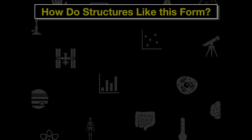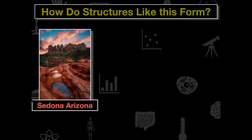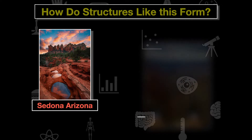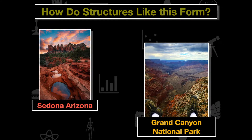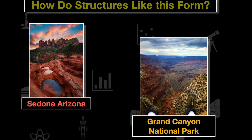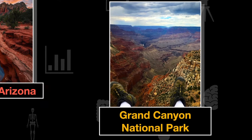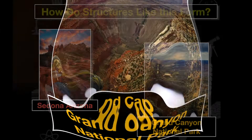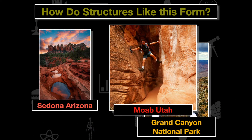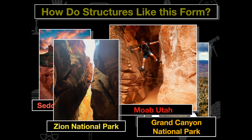The question I'm going to pose right now is: how do structures like this form? Here's a picture of Sedona, Arizona — these are pictures I've taken through my travels out west. Here we have Grand Canyon National Park, a slot canyon in Moab, and another slot canyon in Zion National Park. How do structures like this form and how long does it take?